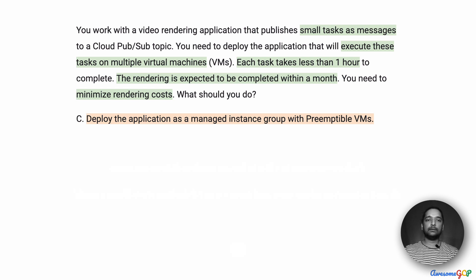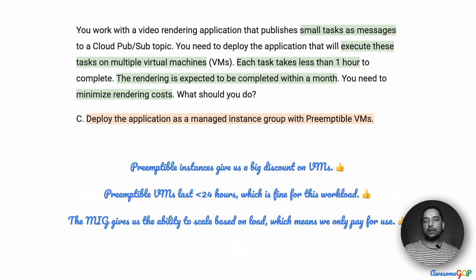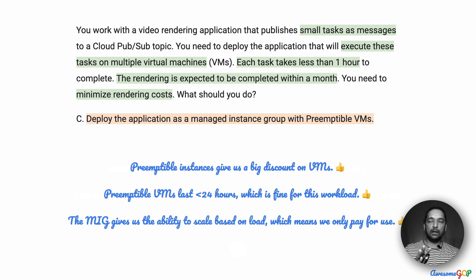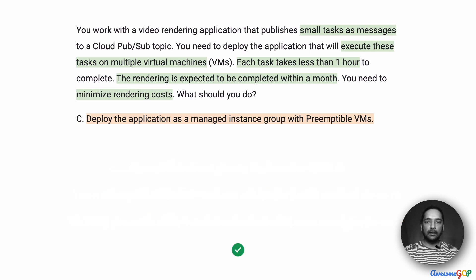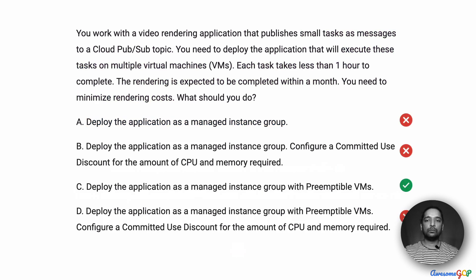Option C suggests deploying the application as a managed instance group with preemptible VMs. This combines all the good things we wanted. The preemptible VMs give us a solid discount. Because preemptible VMs last for a maximum of 24 hours, this works perfectly fine since our task takes only one hour to complete. In addition, because we are using a managed instance group, it will scale as required and we will only pay for what we use. So the best option is to deploy the application as a managed instance group with preemptible VMs.